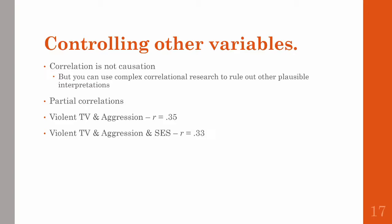Researchers who study this are often concerned with the role that socioeconomic status plays — whether economically challenged children just happen to watch more violent TV and are also more aggressive. So you first examine the correlation between violent TV and aggression. Hypothetically, let's say we get a correlation of 0.35. Then you calculate the partial correlation between violent TV and aggression, this time controlling for the child's socioeconomic status, and now we get a correlation of 0.33.